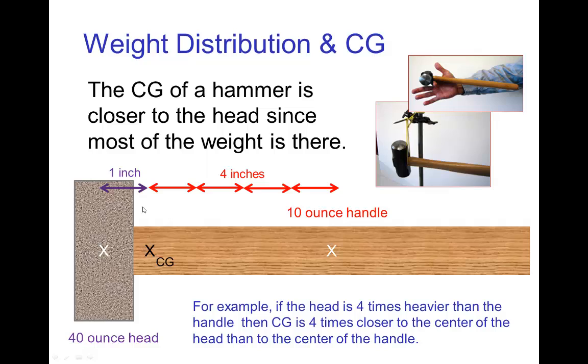If it was simple like this, it's something that could be calculated. Say the head is four times heavier than the handle, then the center of gravity is located four times closer to the head of the hammer than to the center of the handle, and so forth.